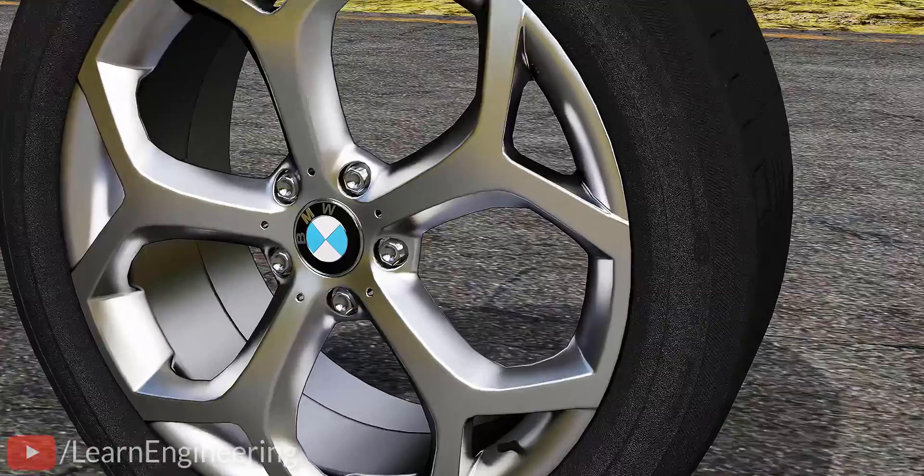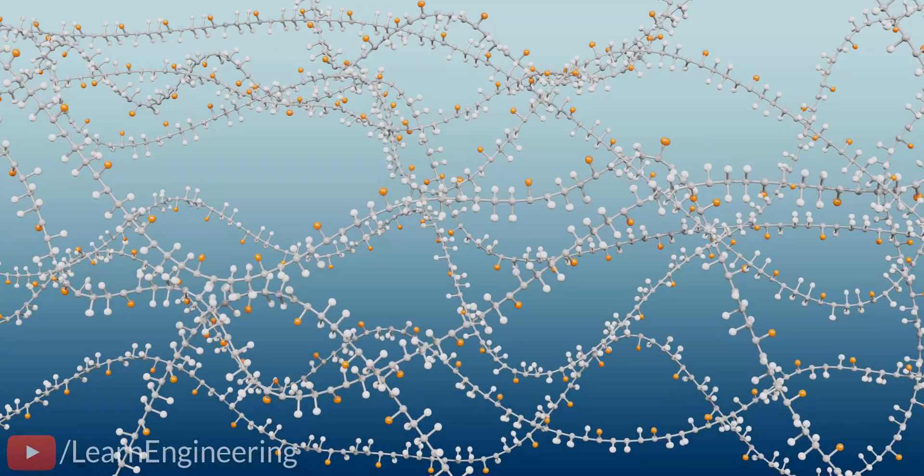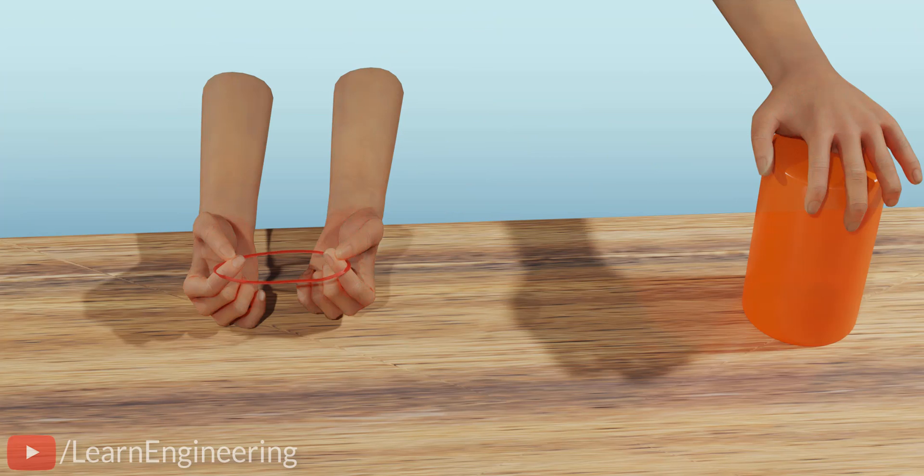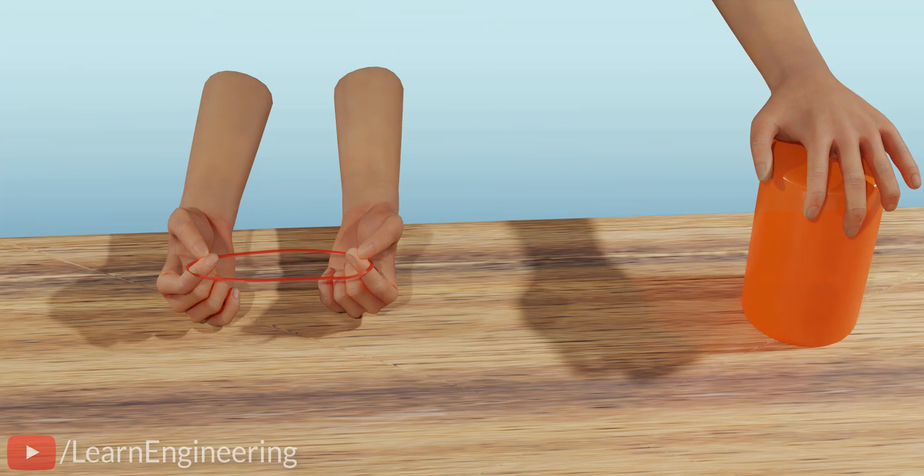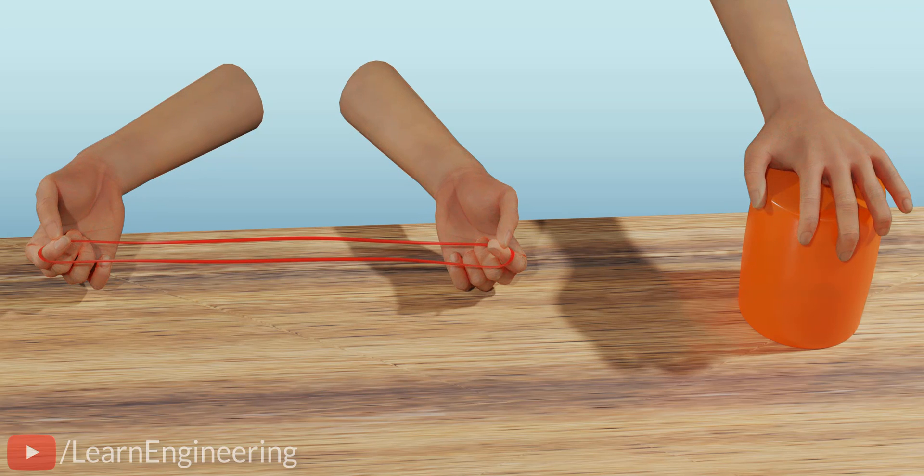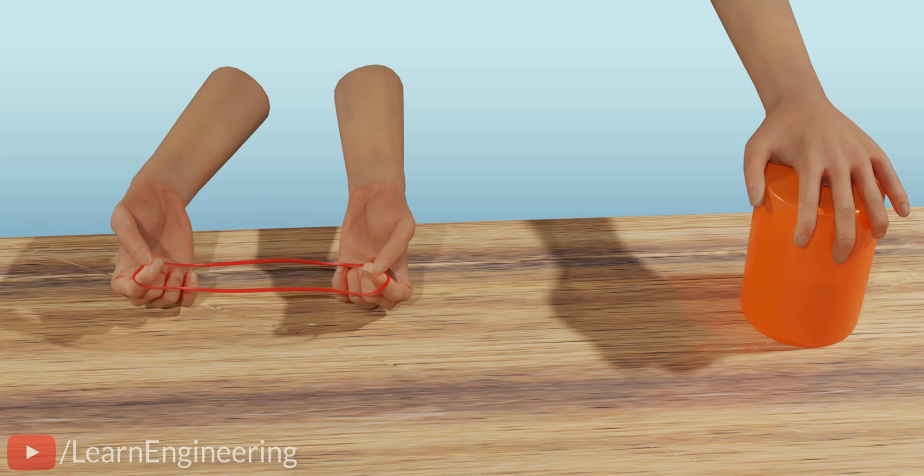To understand the physics behind rolling resistance, you should first learn about the material properties of rubber. Consider this rubber band or this cylinder made up of rubber. You can easily stretch it or compress it by gradually applying force. When you release your hand, it goes back to its original shape.